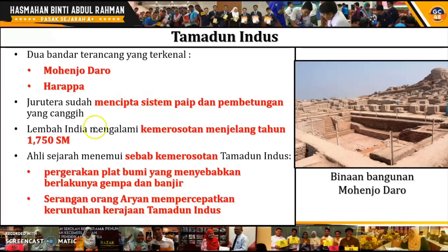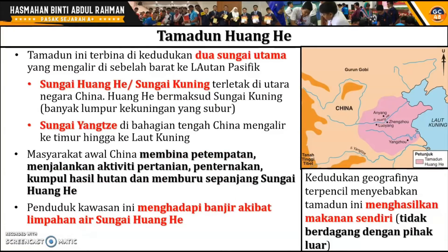Itulah sejarah sedikit mengenai perkembangan Tamadun Indus. Dari segi sumbangan-sumbangannya, kita akan tengok dengan lebih lanjut dalam subtopik yang berikutnya. Dalam sesi ini, cikgu huraikan mengenai pengenalan untuk setiap tamadun. Kemudian kita pergi pula kepada Tamadun Huanghe, iaitu tamadun yang terakhir dalam empat tamadun ini.